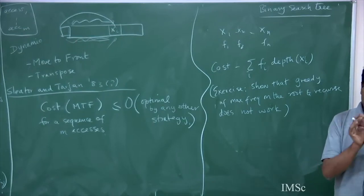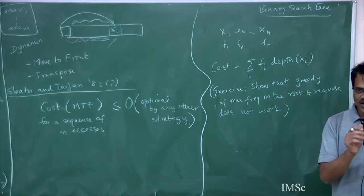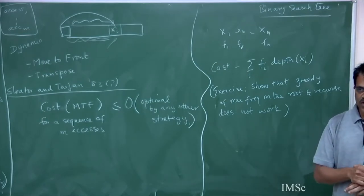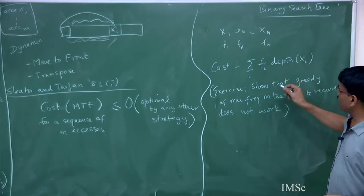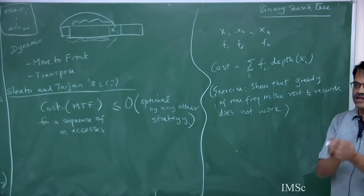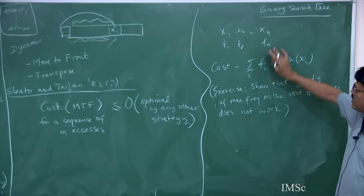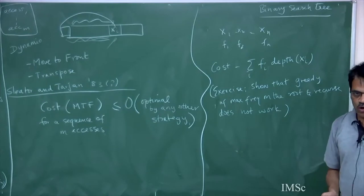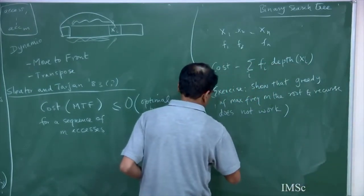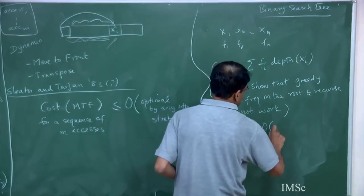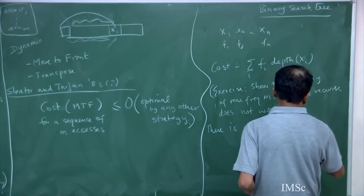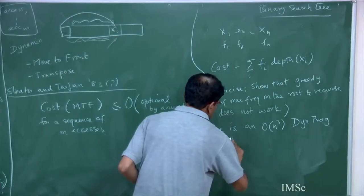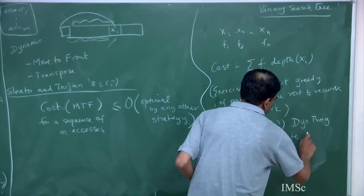This is one of the classic standard dynamic programming examples. I am sure it is in Cormen in the section or exercises on dynamic programming. You can actually compute the optimal BST using dynamic programming. There is an O(n³) algorithm which can be improved to O(n²). The idea is: I want to choose a root. How many possible choices are there? There are n possible choices. Once I fix the root, whatever is on the left should be an optimum binary search tree for all the keys on the left, and similarly for the right.